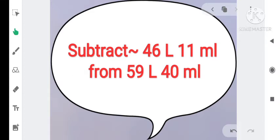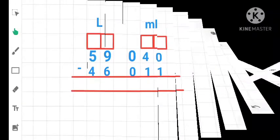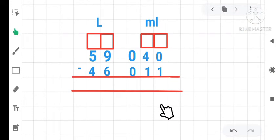Now let's solve one example of subtraction. Here we are given to subtract 46 liter 11 milliliter from 59 liter and 40 milliliter. It means we need to subtract this value from this value. So let's write this in column form. Here the sum is in column form. So let's subtract.